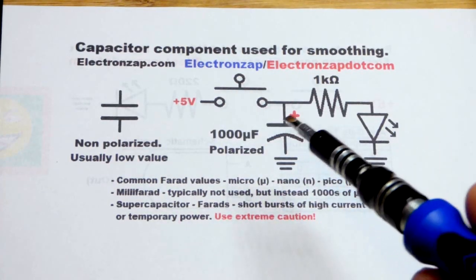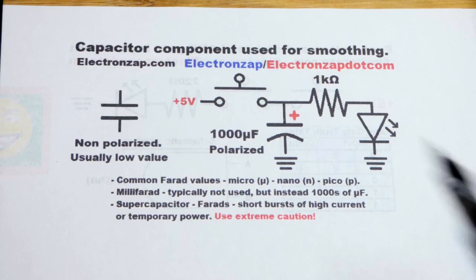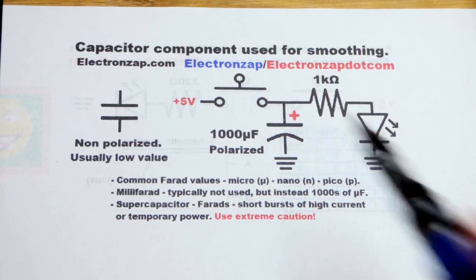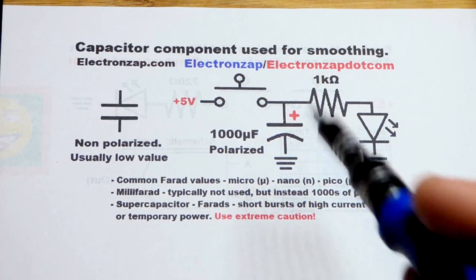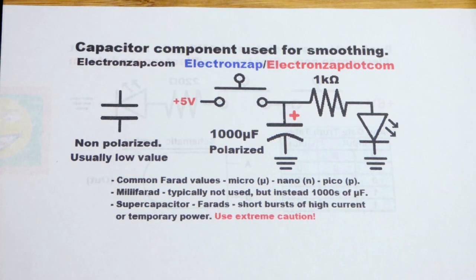That charge comes from the power supply and can be used later. For smoothing purposes it's to help hold the voltage because a lot of sensitive circuits, a voltage change makes a big difference.